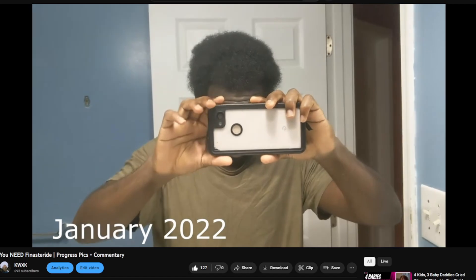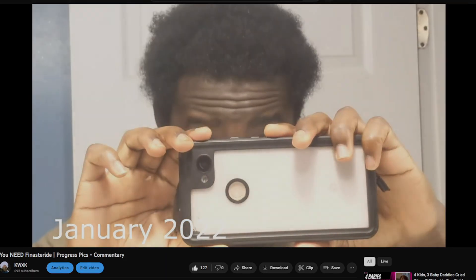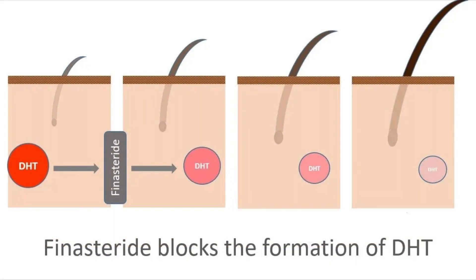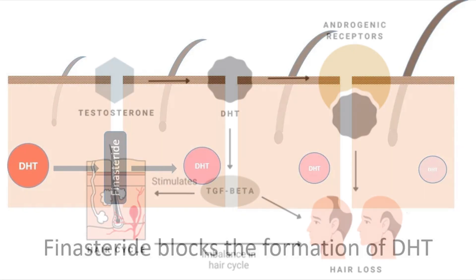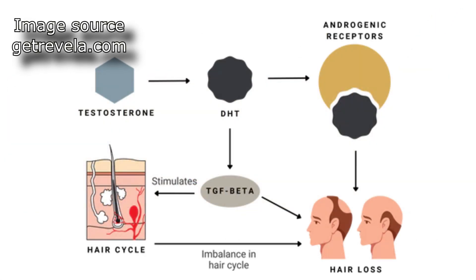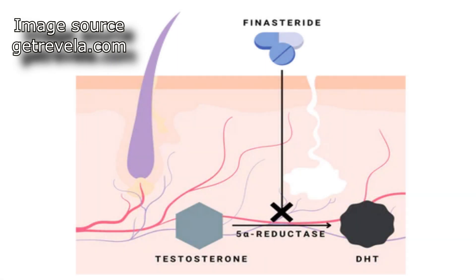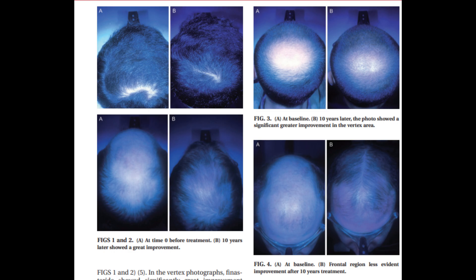When it comes to the treatment of male pattern baldness, finasteride affects the hair growth cycle. Finasteride works by blocking the conversion of testosterone to dihydrotestosterone, also known as DHT, which contributes to hair follicle miniaturization in individuals with androgenetic alopecia. It does this by inhibiting the 5-alpha reductase type 2 enzyme, which is the enzyme that converts testosterone to DHT. This type 2 enzyme is located in the hair follicles and also the prostate.